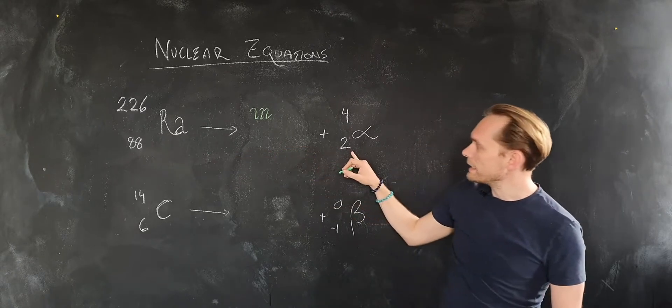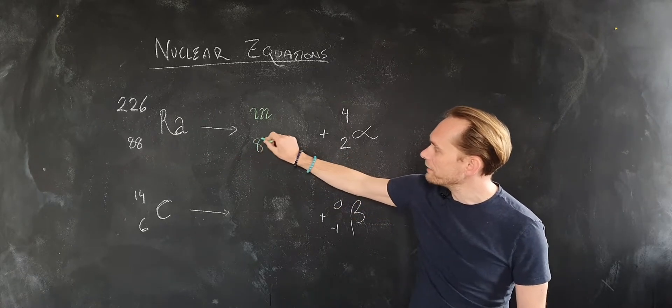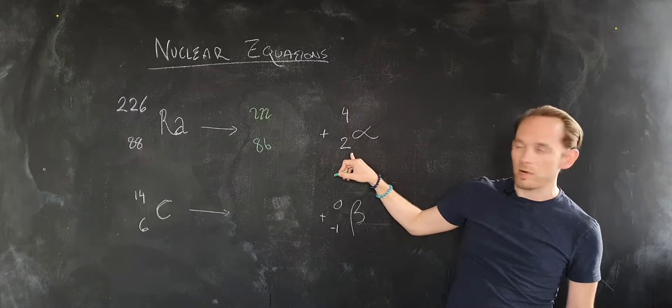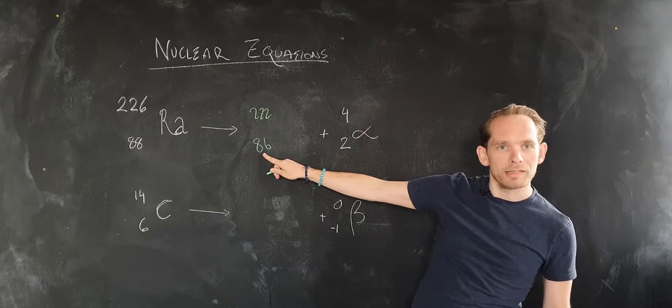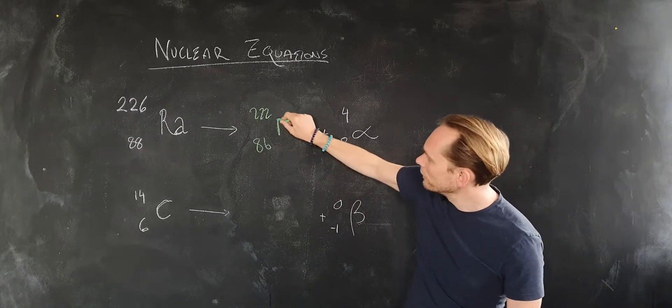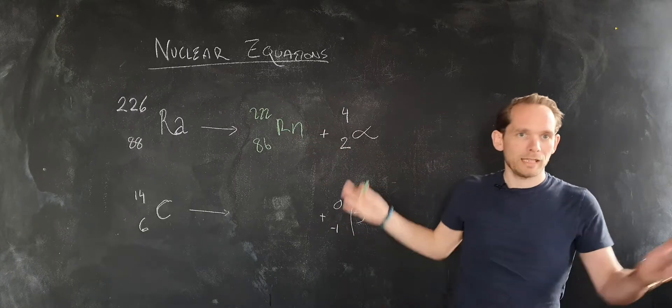Likewise, this has got to add to 88 to be maintained, so 86 plus 2 will work. Then you look up element number 86 on the periodic table, and it's radon, and it's done.